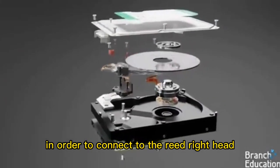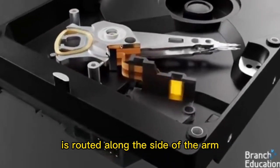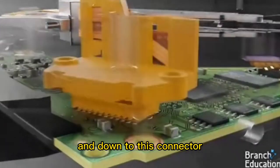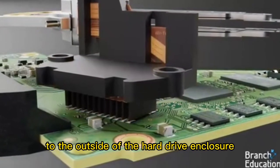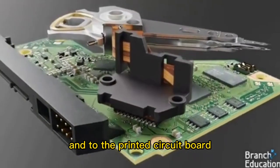In order to connect to the read write head, a flexible ribbon of wires is routed along the side of the arm and down to this connector, which feeds signals to the outside of the hard drive enclosure and to the printed circuit board or PCB.